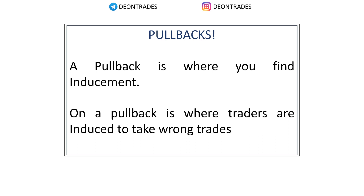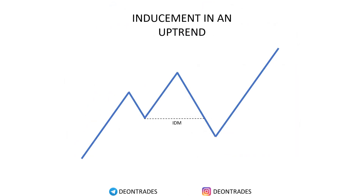Now if you don't know what a pullback is or don't know how to differentiate a valid pullback from a fake pullback, I have made a video about that — you can just click on the video that pops up on top. Here is a simple drawing showing inducement in an uptrend: in an uptrend, inducement is found on the first valid bullish pullback.